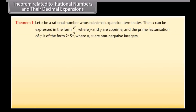Theorem related to rational numbers and their decimal expansions: Let x be a rational number whose decimal expansion terminates. Then x can be expressed in the form p/q where p and q are co-prime, and the prime factorization of q is of the form 2ⁿ × 5ᵐ, where n and m are non-negative integers.